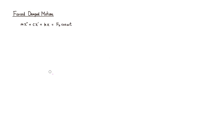Let's look at the forced damped motion. So we put the damper back in. The equation is mx'' + cx' + kx = f₀cos(ωt), where f₀cos(ωt) is the external force.